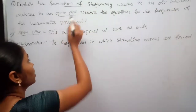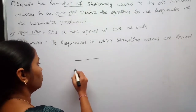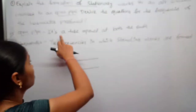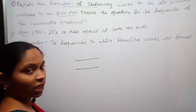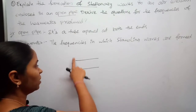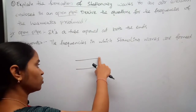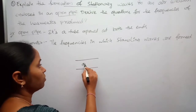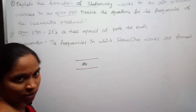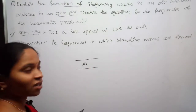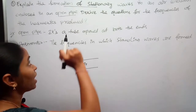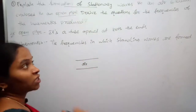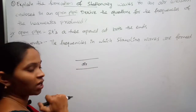We have to consider an open pipe. What is an open pipe? It is simply a tube opened at both ends. In this pipe, air is enclosed, and we have to find the formation of the stationary waves in this air column.